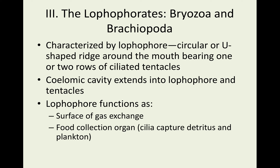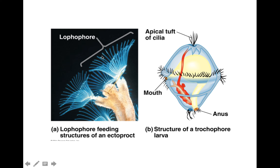The third phylum and final one I'm going to discuss today are the lophophorates — the Bryozoa and the Brachiopoda. These organisms are characterized by a structure called the lophophore, a circular or U-shaped ridge found near the mouth that has ciliated tentacles. The lophophore functions for surface gas exchange as well as food collection.